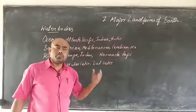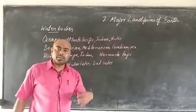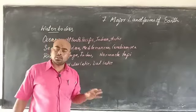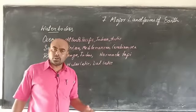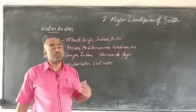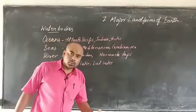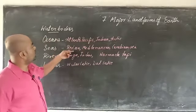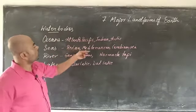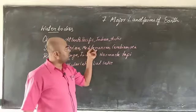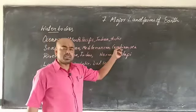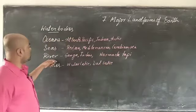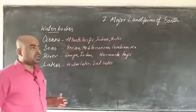Next, seas. Seas are also large saline water bodies, but they are smaller than oceans. Examples of seas are the Red Sea, Mediterranean Sea, Caribbean Sea, etc.